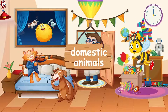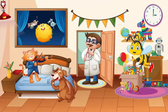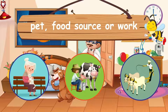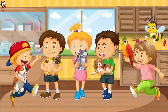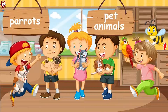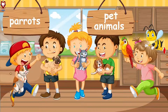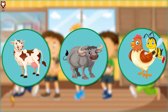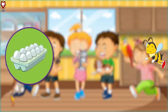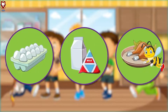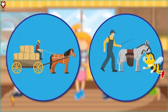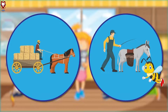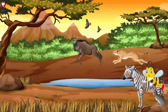Domestic animals are mostly kept by humans as a pet, food source, or for work purposes. Dogs, cats, and parrots are pet animals — they are so fun to play with! Cows, buffaloes, and hens are kept for eggs, milk, or meat, while horses and mules are kept to carry things from one place to another.